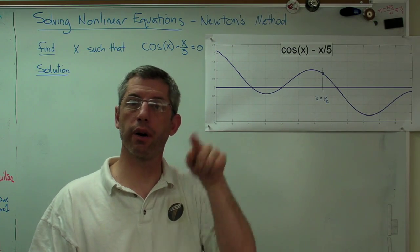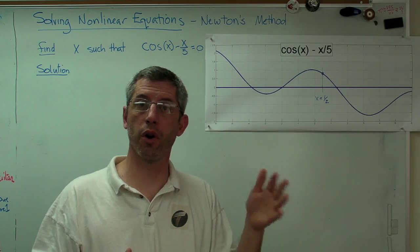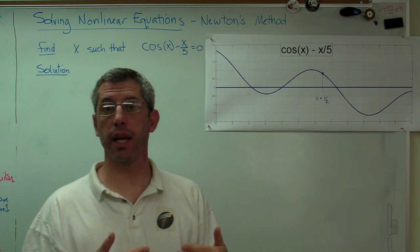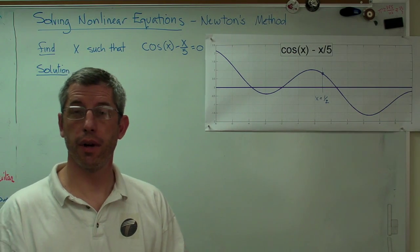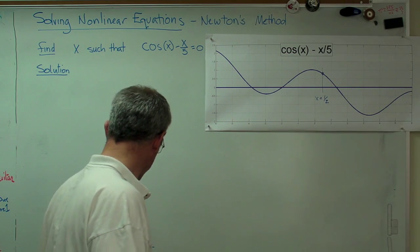So by going around and around by iterating, by going through the same calculation cycle over and over again, our estimate of the answer gets better and better. Eventually we get to the point where it's accurate enough, we don't care anymore, it's time to stop. So that's what we're going to do here.